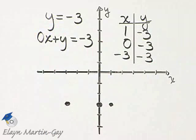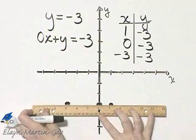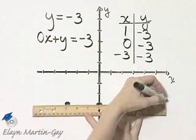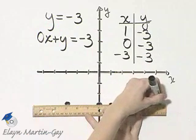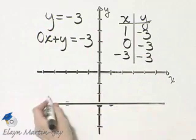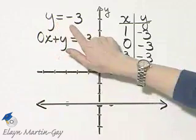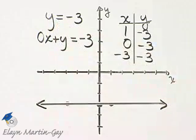Notice these 3 points lie along the same straight line, and it happens to be a horizontal line. This is the graph of y equals negative 3. By the way, any equation of the form y equals some constant will always be a horizontal line.